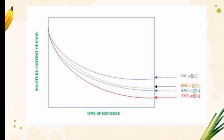Therefore, it can be understood that EMC is dependent on the air vapor pressure, which in turn depends on the temperature and relative humidity of air. Figure 3 shows the graphical representation of change of moisture content with different vapor pressures V1 to V4. For example, shelled corn at air having 70% relative humidity and 40°F has an EMC of 15.7%, whereas it is 10.3% at 140°F.